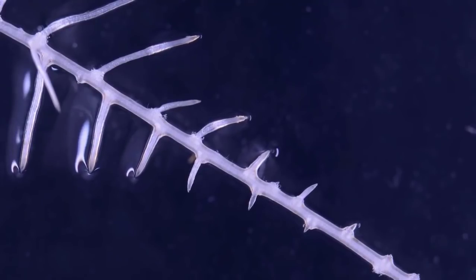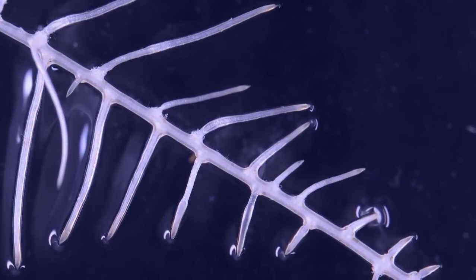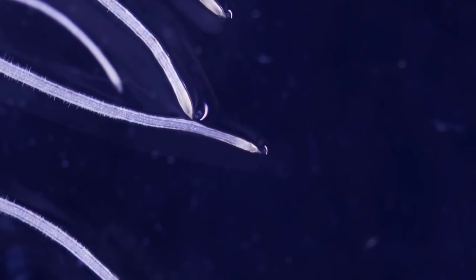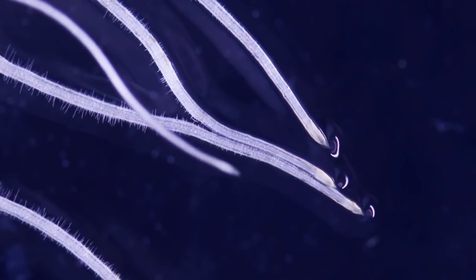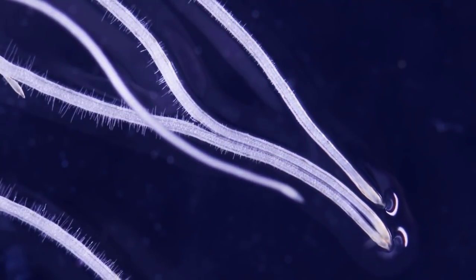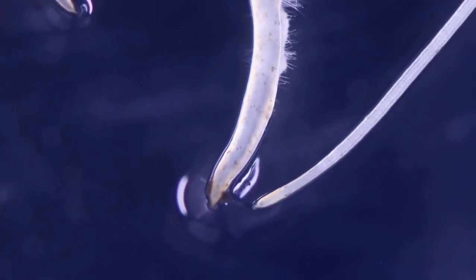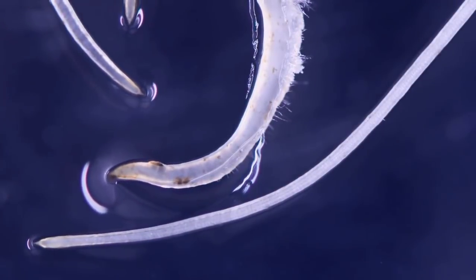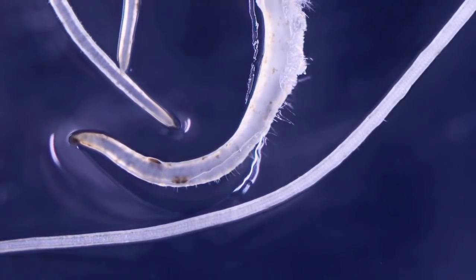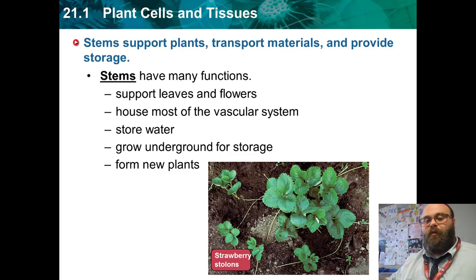There are a couple of parts to a root. The root cap is a tougher part that allows plants to grow roots downward into the soil without damaging the plant itself. The area where the root is actively growing is called the apical meristem — remember that meristem tissue is growth tissue. There is also a vascular cylinder that contains xylem and phloem, helping absorb water and nutrients from the ground along with thousands of tiny root hairs.